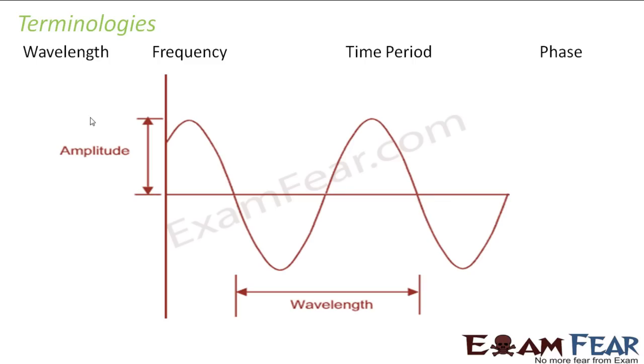The first one is wavelength. What is wavelength? Wavelength is nothing but the distance between two consecutive crests or two consecutive troughs. For example, these are my two troughs, so the distance between them is wavelength.